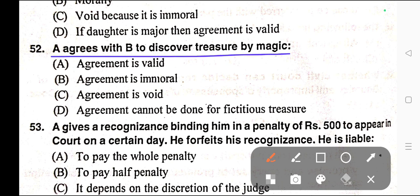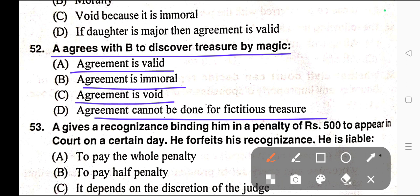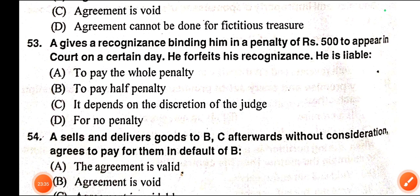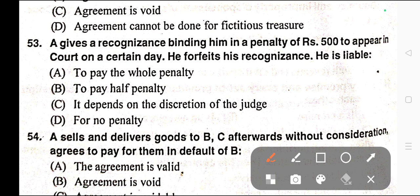Question number fifty-two: A agrees with B to discover treasure by magic. Options: A) Agreement is valid, B) Agreement is immoral, C) Agreement is void, D) Agreement cannot be done for fictitious treasure. Correct answer is option C — agreement is void.